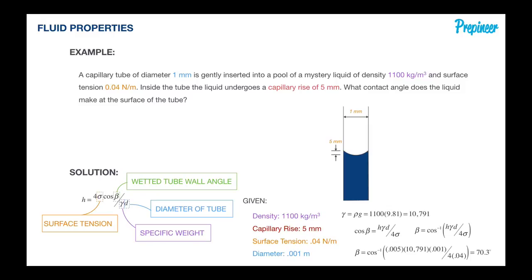We're going to plug in our information, converting the capillary rise from 5 millimeters to 0.005, putting in our specific weight as well as the diameter of 0.001. You see there's a lot of areas to make little minor mistakes that will dramatically affect the angle you're going to get. But in this case, we find that the contact angle for this mystery liquid is equal to 70.3 degrees.